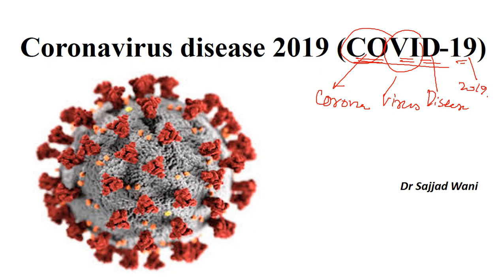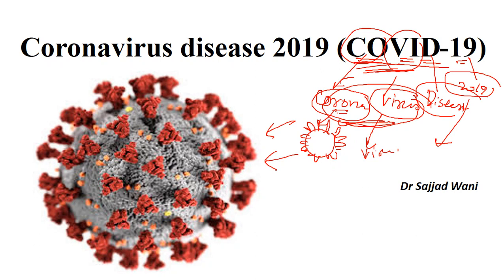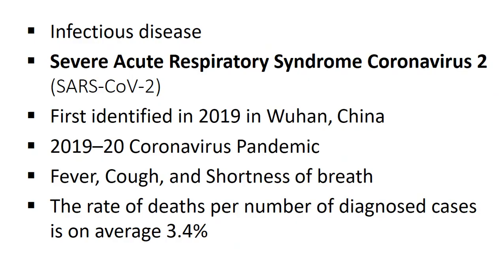The word COVID-19 has been derived from four parts. 'Corona' means crown — the virus that causes the disease appears crown-shaped, as shown in the photograph, which is why it's called corona. It is a viral disease, and the outbreak took place in 2019 in Wuhan, China — hence the name COVID-19.